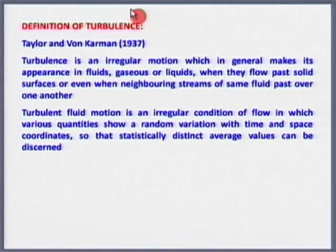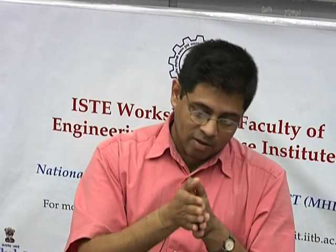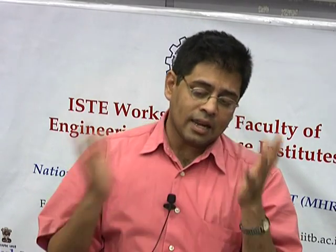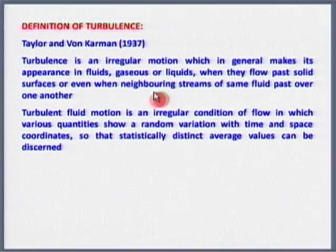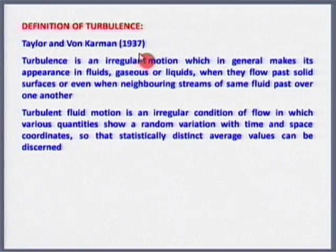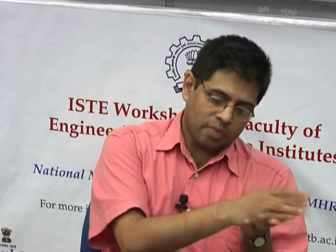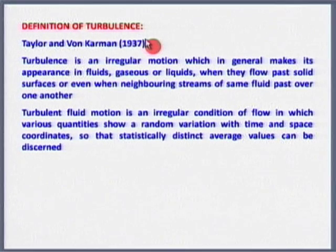In our cities you see traffic at any time of day or night where all kinds of vehicular motion occur in all possible directions - somebody will come from some side, somebody will want to turn right from the leftmost lane. This kind of chaotic, irregular, unpredictable motion which is there in all fluid flow situations - whether gas or liquid - when fluid flow passes over a solid surface like an airfoil or airplane wing, or when fluid streams mix amongst themselves, that is called turbulence.